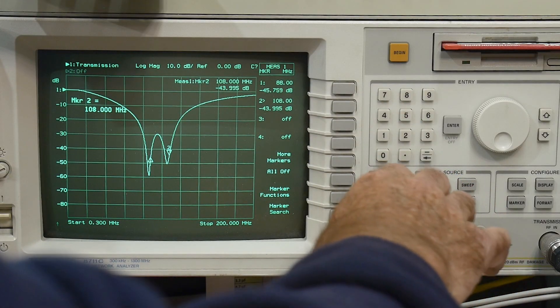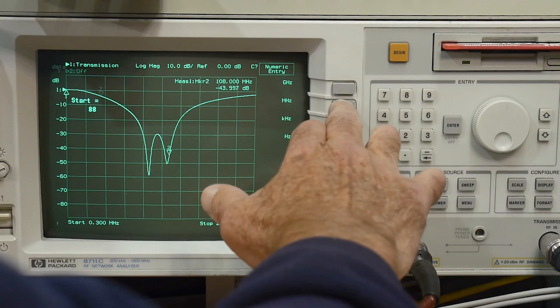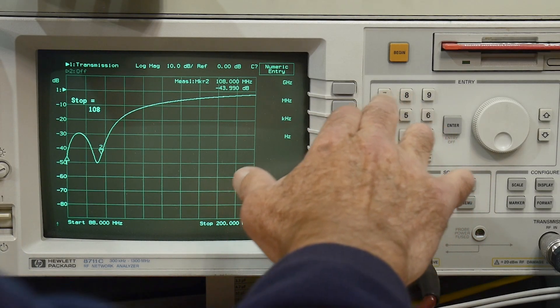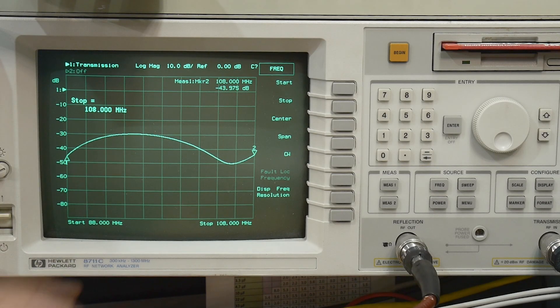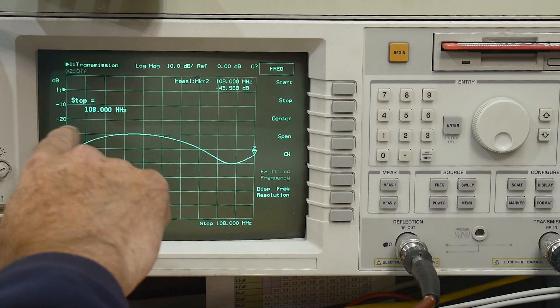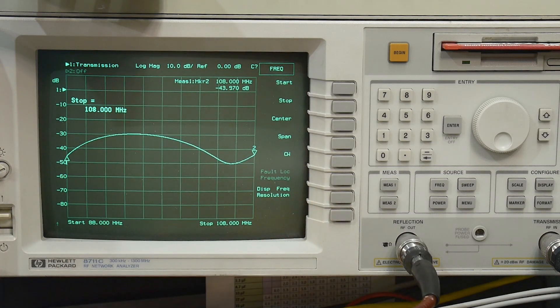Let's zoom in on frequency. We'll do a start of 88 megahertz, a stop of 108 megahertz. There we go. We're rejecting below minus 30 to minus 50. That's what it looks like where it's rejecting.